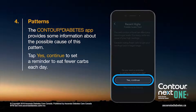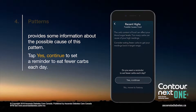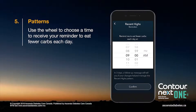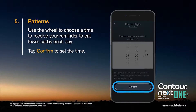Tap Yes, Continue to set a reminder to eat fewer carbs each day. Use the wheel to choose a time to receive your reminder to eat fewer carbs each day. Tap Confirm to set the time.